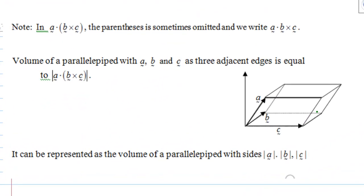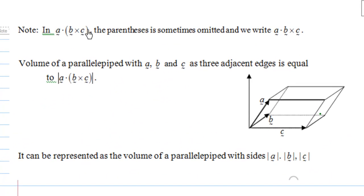Note that in a dot b cross c, sometimes we omit the parentheses, that is the bracket, and we just write a dot b cross c without any bracket.